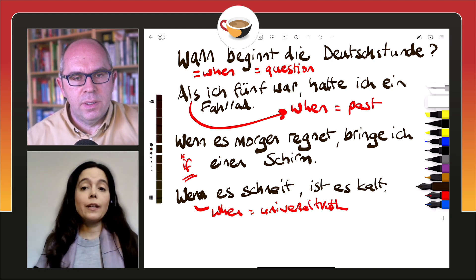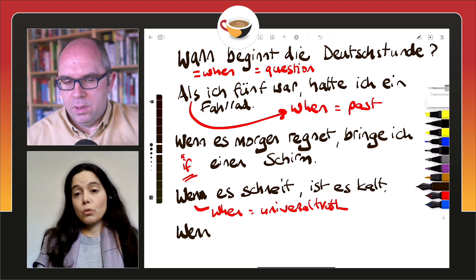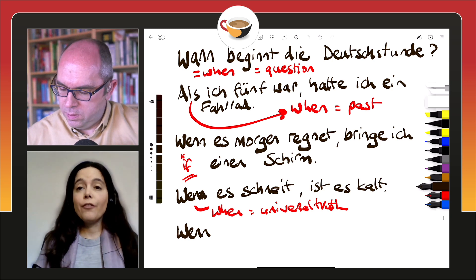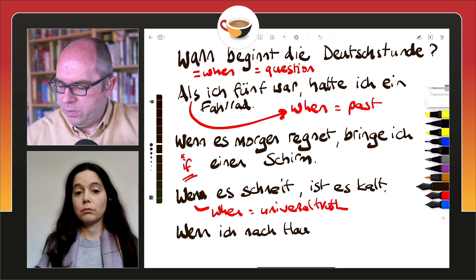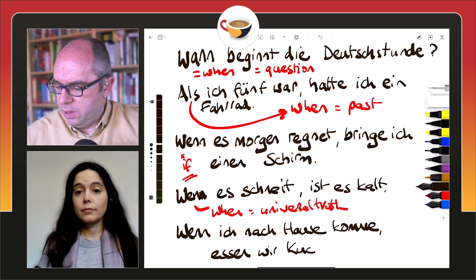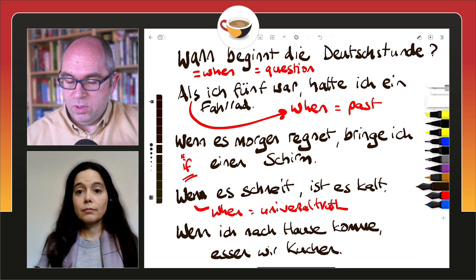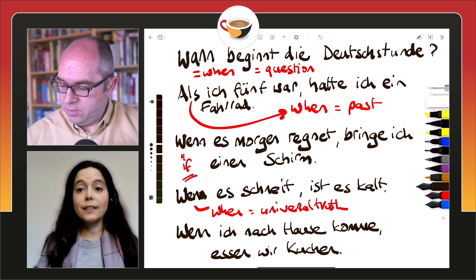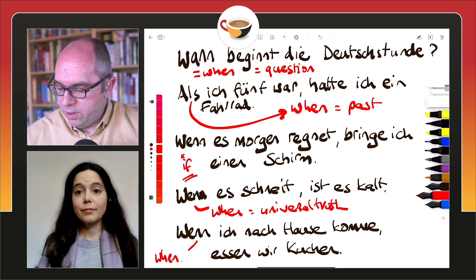And we can also use wenn for making plans in the future. For example, wenn ich nach Hause komme, essen wir Kuchen — when I come home, we will eat cake. So that one is wenn used for the future.